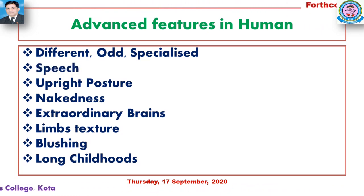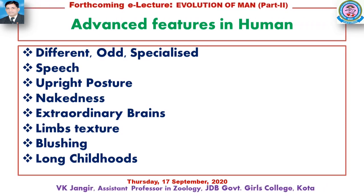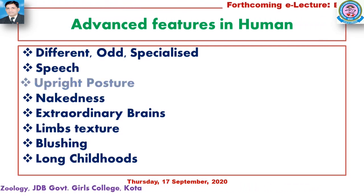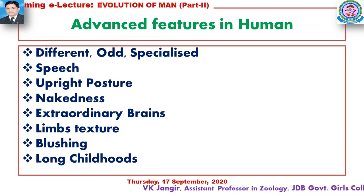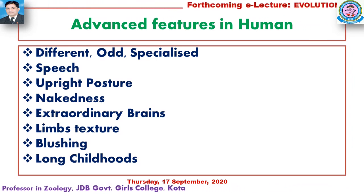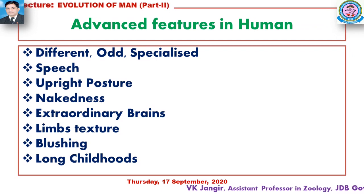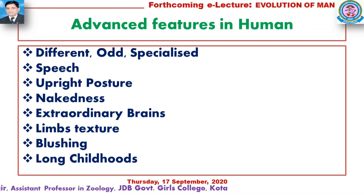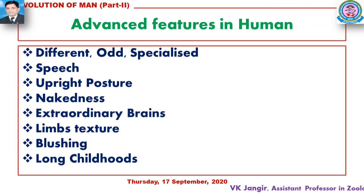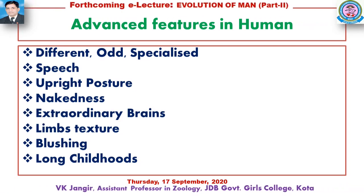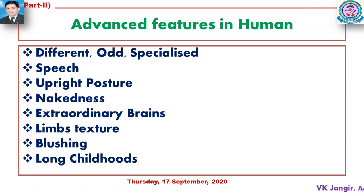The second advanced feature is speech. Comparing humans to other primates, humans have reduced body hair and less body hair overall. Humans also have an extraordinary brain — the cerebral cortex part is more developed compared to apes and monkeys.